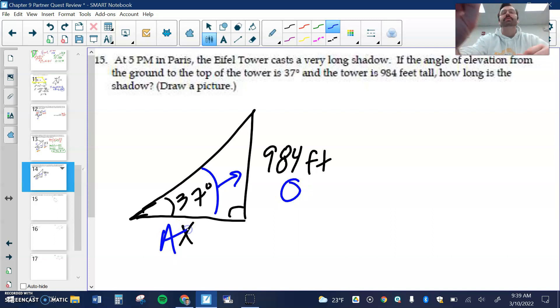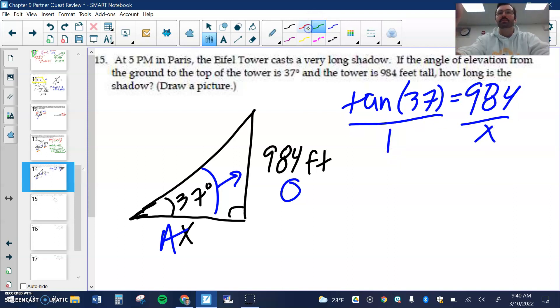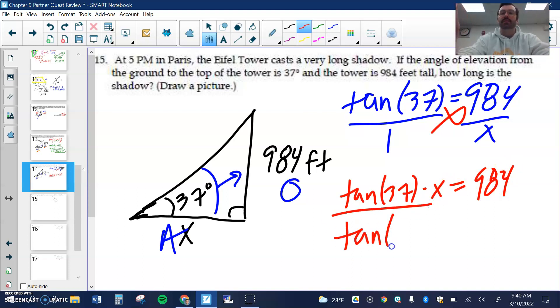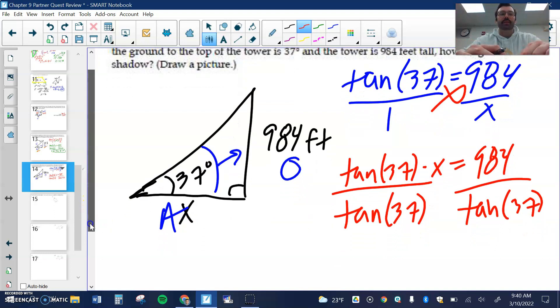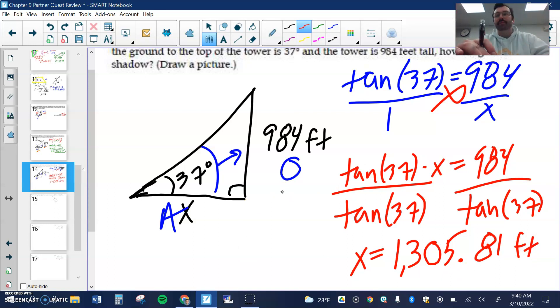O and A, we're doing tangent again. So tangent of 37 equals 984 over x over 1. Cross multiply again, tangent of 37 times x equals 984. Divide by the tangent of 37. x should equal 1305.81 feet. Next video I'll do the back page.